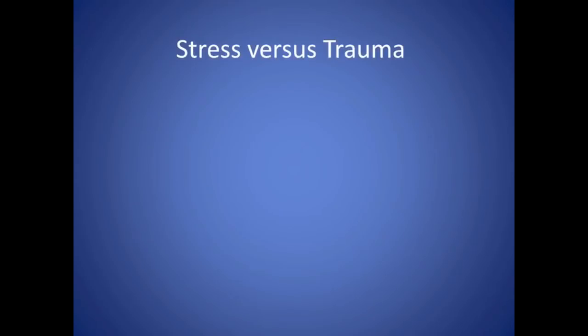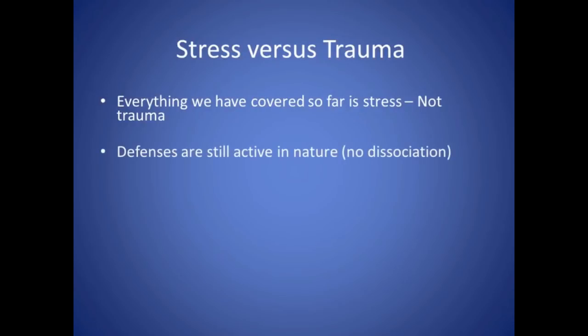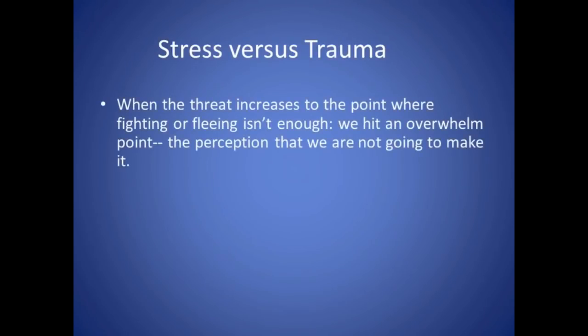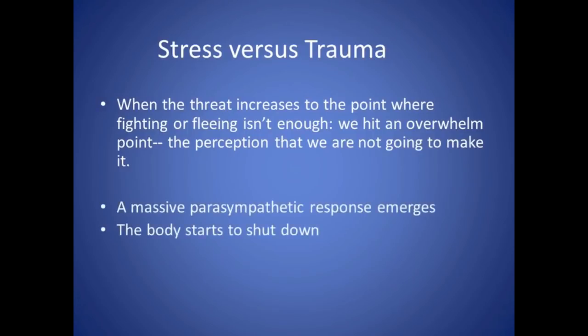Now we're coming to a critical point in the stress and trauma process. Everything we've covered so far is stress or high stress. It's not trauma. Even though it can be terrifying and involve panic, we're still in the realm of fighting and fleeing. All the defensive responses are still active. The psyche hasn't fragmented. There's no dissociation as part of the defensive response. In other words, we are still in the sympathetic branch of the autonomic nervous system. Trauma shows up at a very specific moment. When the threat increases to the point where fighting or fleeing isn't enough, we hit an overwhelmed point. We have a sense that we're not going to make it. At this point, a massive parasympathetic response emerges and your body begins to shut down.